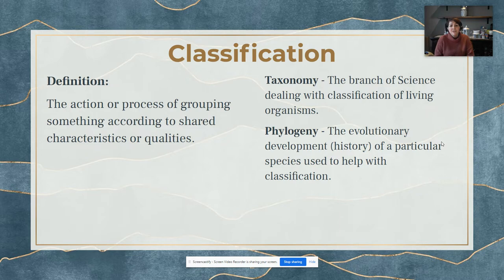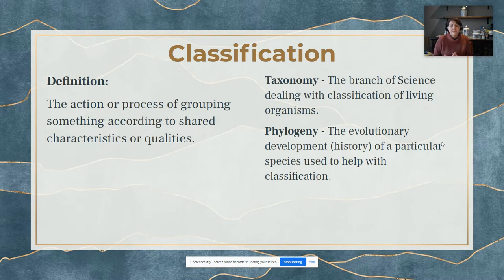In biology, when we study the classification of living things and put living things into groups, we call that taxonomy. We're going to be looking at taxonomy and using it to help us understand evolutionary history. The word that means evolutionary history is phylogeny. So classification or taxonomy and phylogeny will work together to teach us a lot about where an organism came from and its evolution.